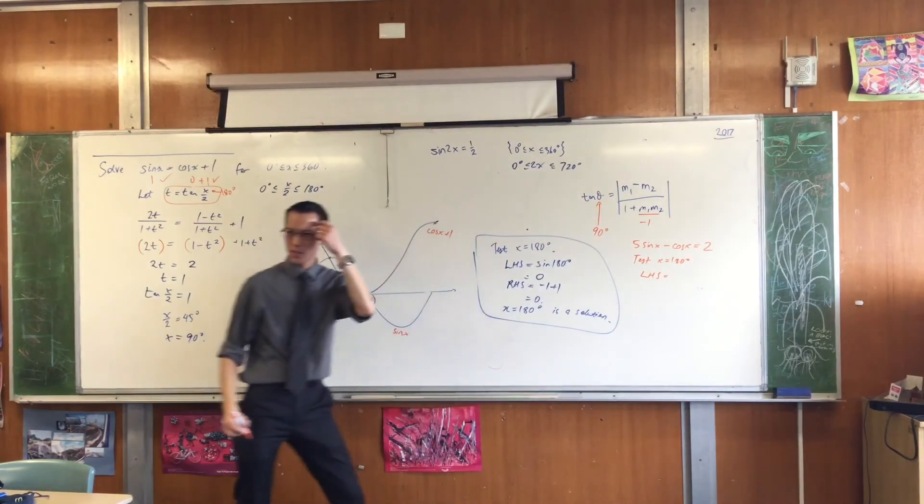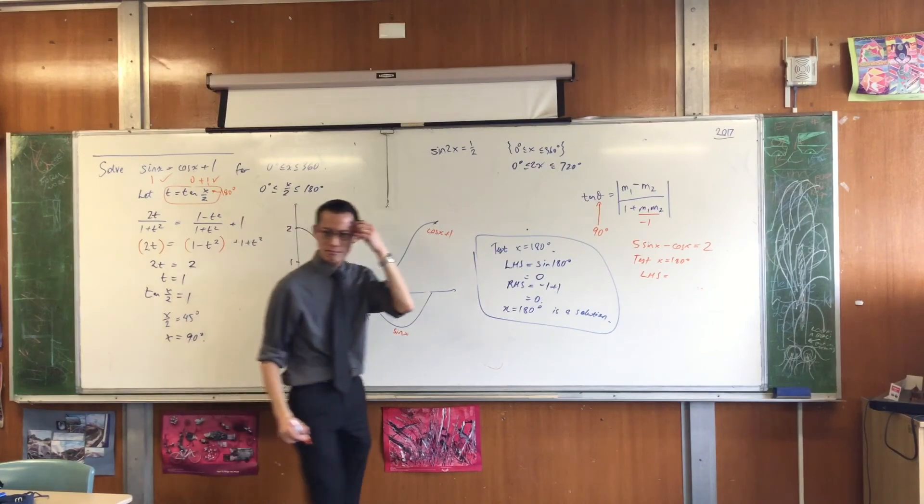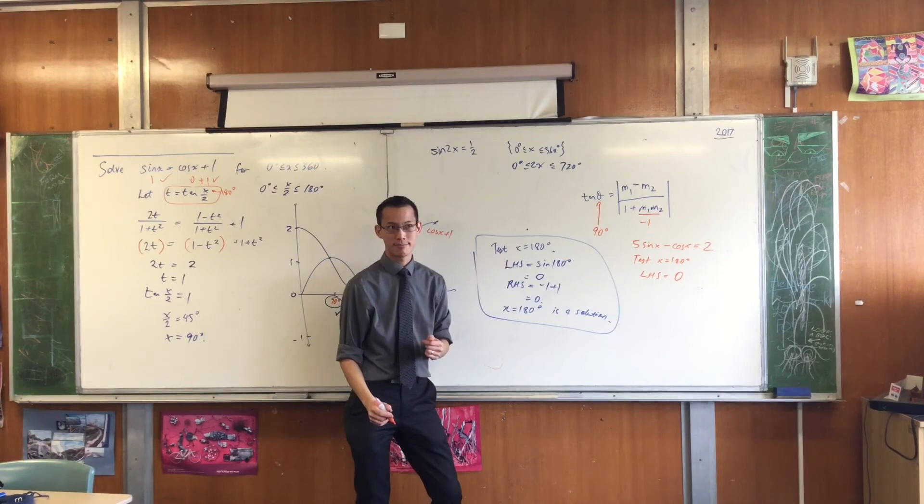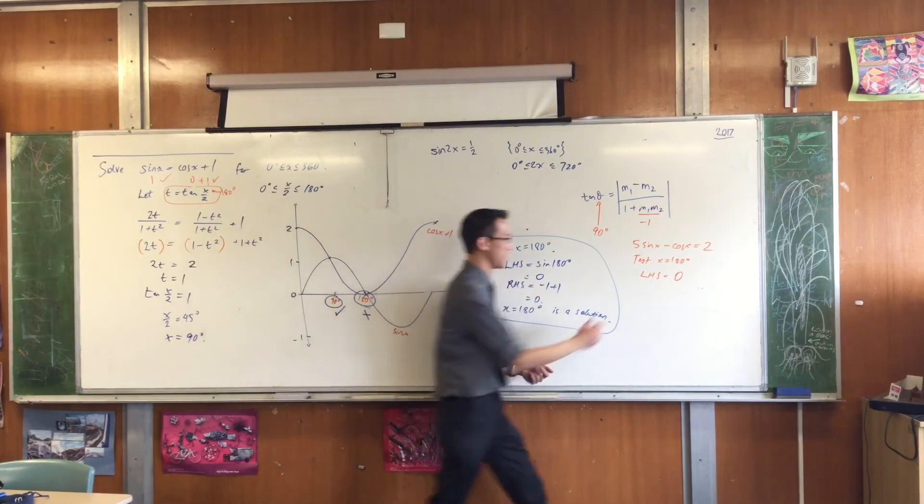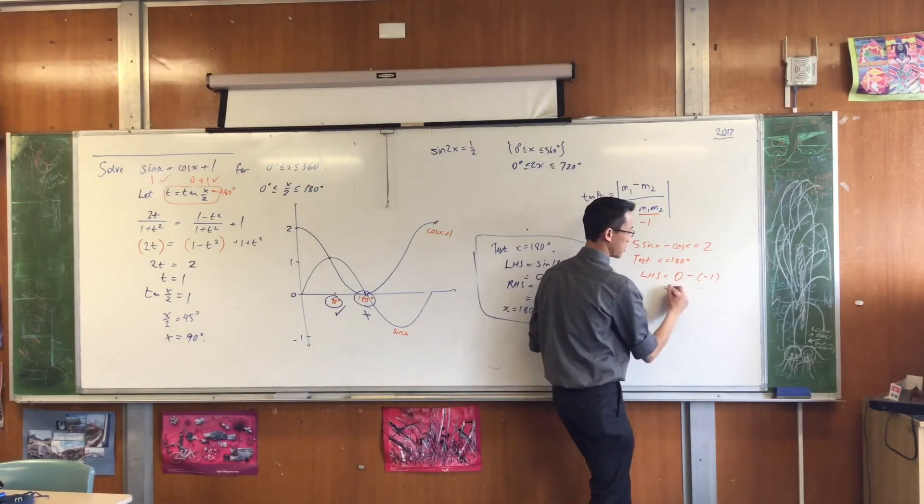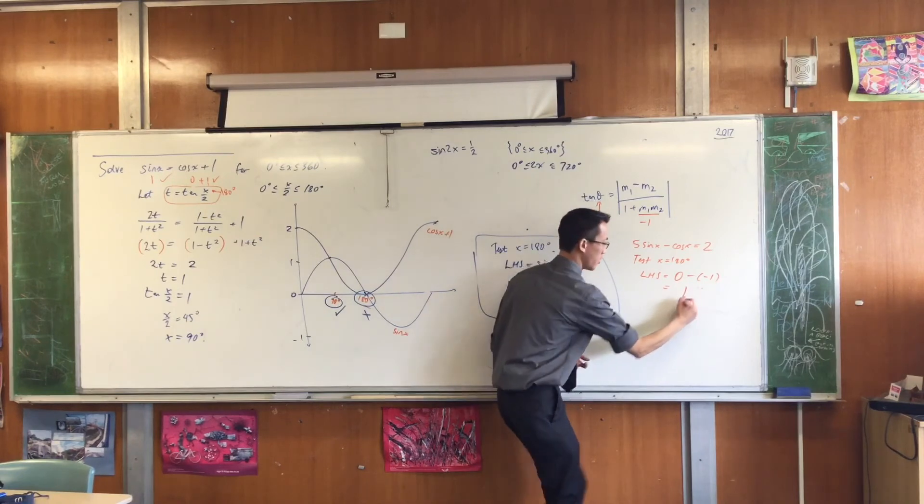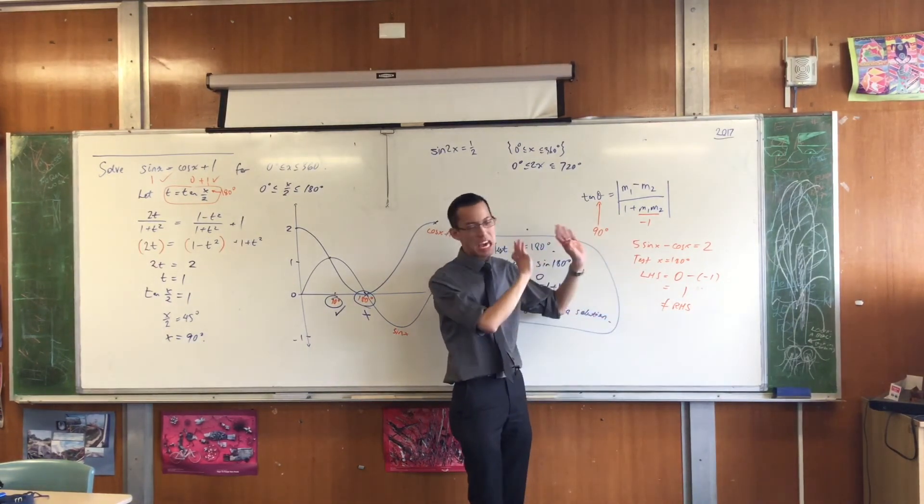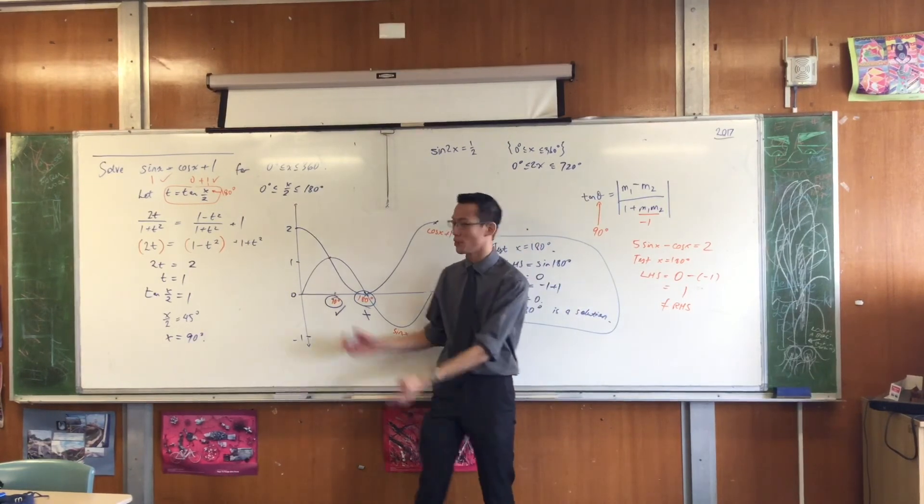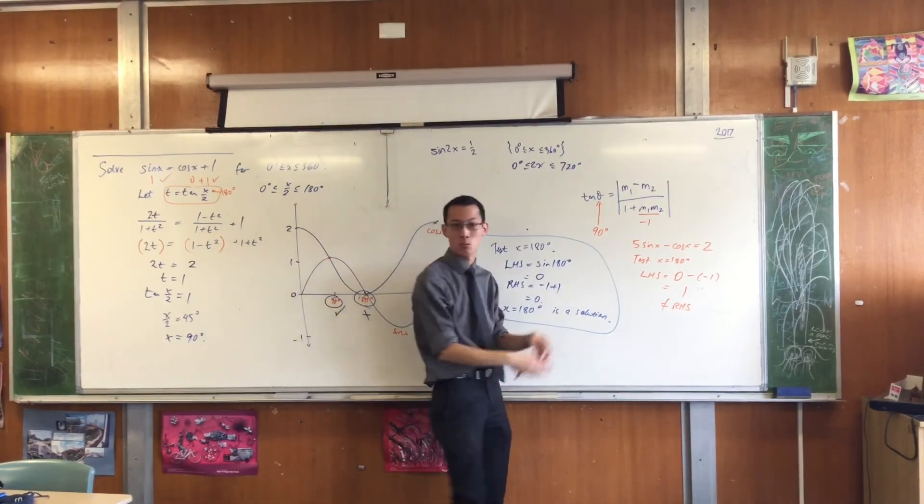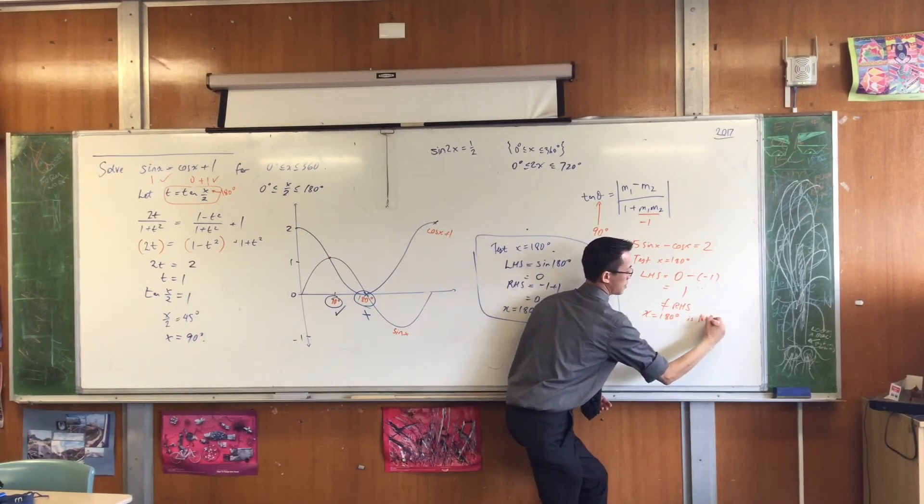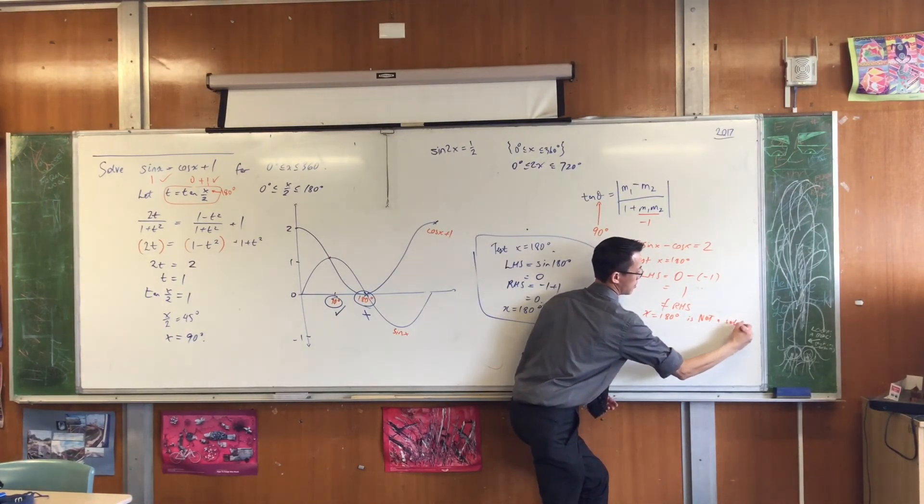5 times sine 180, what is that? That's zero. Cos 180, that is negative 1, minus negative 1, so that's 1, which is not the right-hand side. So therefore, in this case, x equals 180 is not a solution, which is a relief, because I showed you the graph. We saw all the points of intersection, we got them all. So x equals 180 is not a solution.